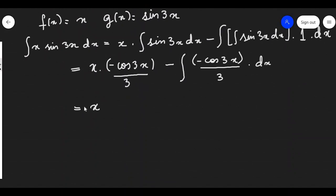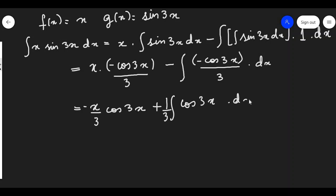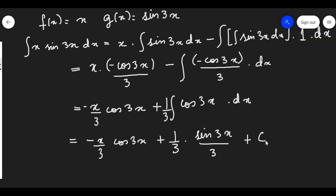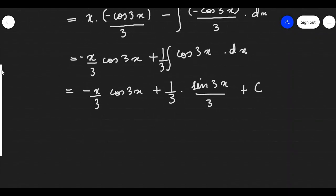The first term will be minus x by 3 cos3x. Minus into minus will become plus, giving us integration of cos3x, and we can take 1 by 3 outside the integration. So we get 1 by 3 integration of cos3x dx. We will integrate cos3x just like we integrated sin3x, using integration by substitution. So we can write it as minus x by 3 cos3x plus 1 by 3 times sin3x upon 3, plus c.